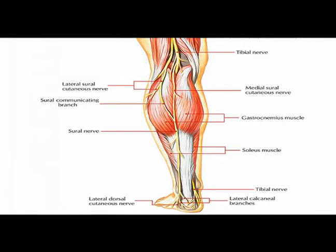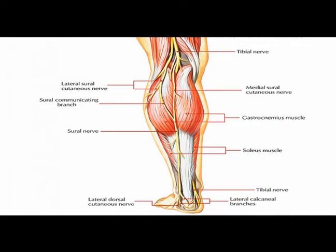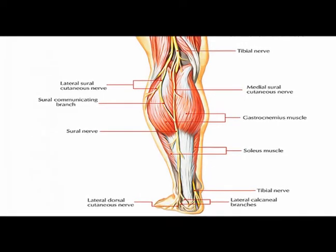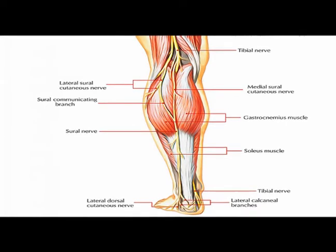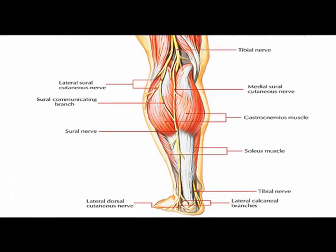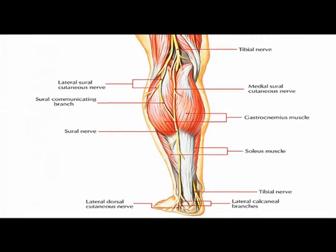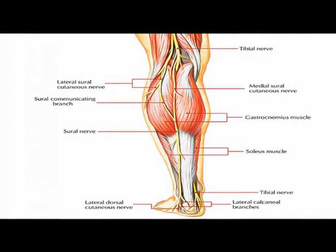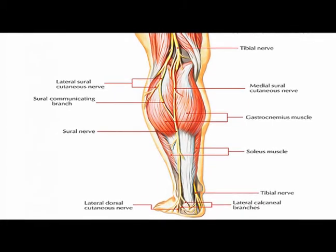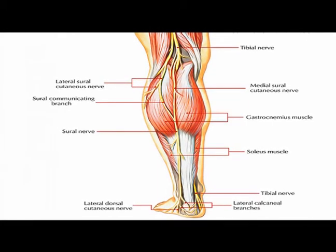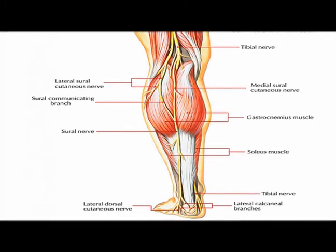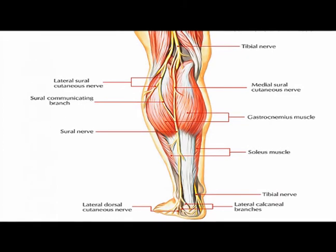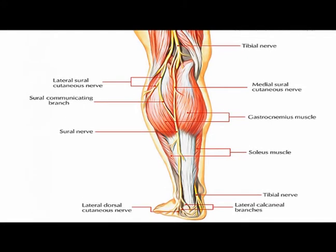The tibial nerve supplies motor innervation to a large number of muscles. The long list includes the gastrocnemius, the popliteus, the soleus, the tibialis posterior, the flexor digitorum longus, the flexor hallucis longus, the abductor hallucis, the flexor digitorum brevis, the flexor hallucis brevis, the lumbricals of the foot, the quadratus plantae, the flexor digiti minimi, the abductor hallucis, the interosseous muscles of the foot, and the abductor digiti minimi.